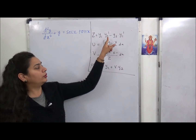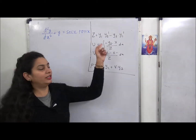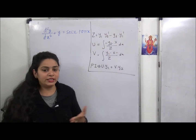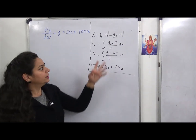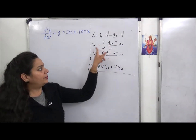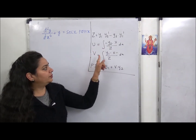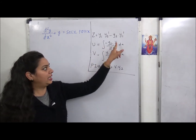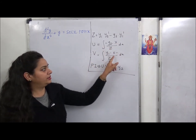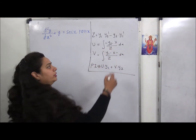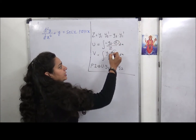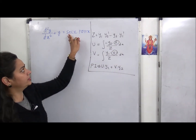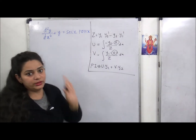Here y1' means the derivative of y1, and y2' means the derivative of y2. In u there is a minus sign, and in v there is a plus sign — no minus. Here X is the right-hand side of the equation. In this case, X = sec x · tan x.